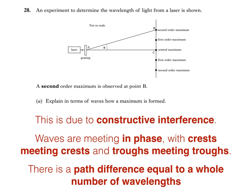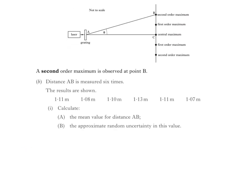This is explained further in another video with the title 'Interference,' and it's about time we spoke about uncertainties. This is Part B1 of the question. Distance AB is measured 6 times and the results are shown. We're then asked to calculate the mean value for distance AB and then the approximate random uncertainty in this value.